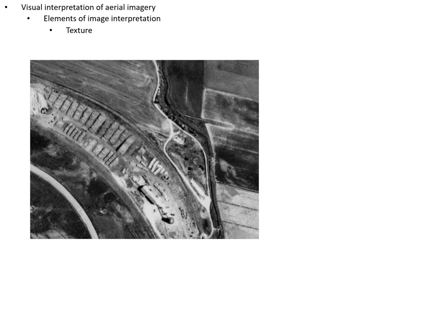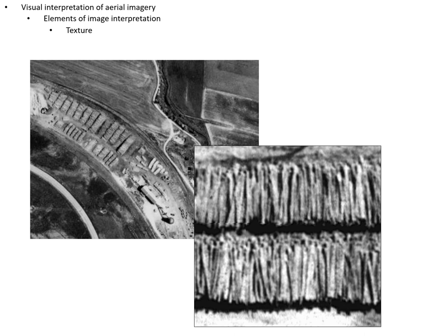Another texture example — there's a curving line across the image with stacks of linear objects. When you magnify them you see a railroad track and some sort of industrial feature. These are logs — this is a sawmill in Oregon, and those stacked linear objects are the raw material.